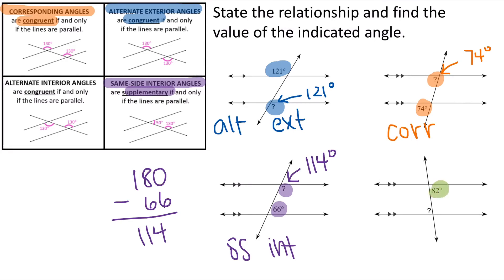Lastly, I have this 82 and the question mark. Those are alternate interior angles, which are always congruent, meaning they have to be the same. So this question mark is also going to be 82 degrees.